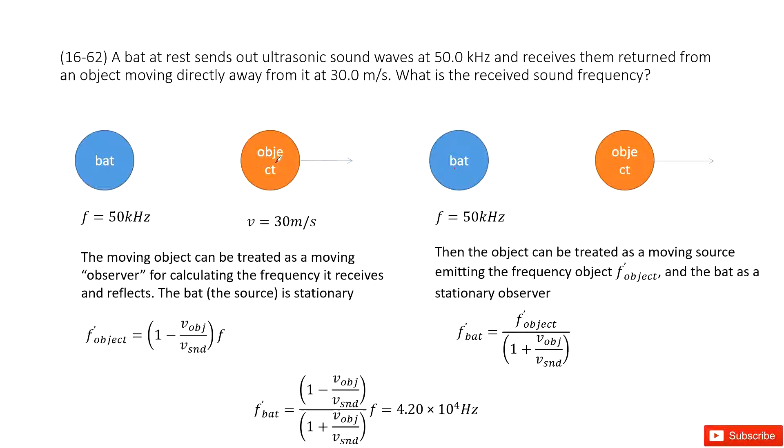So this problem can be the observer moving away from the stationary source. So which function can we choose?